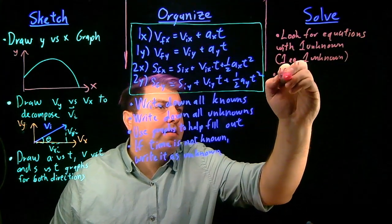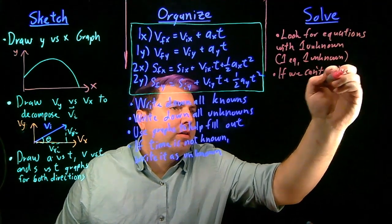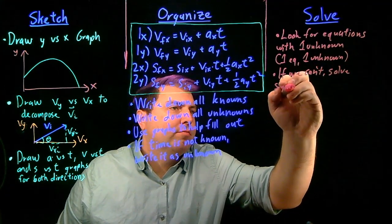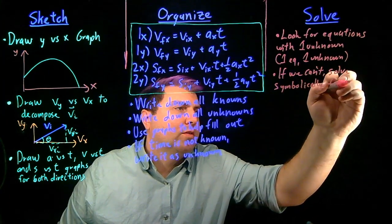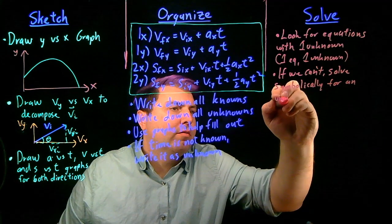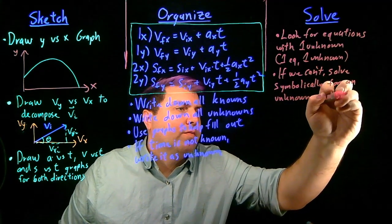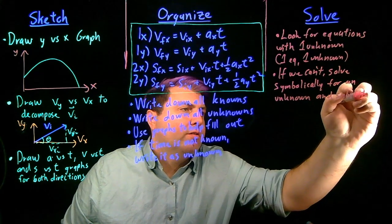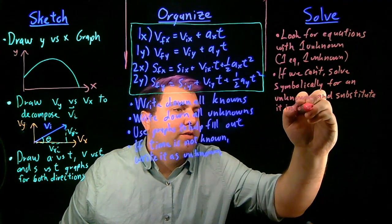But if we can't do this, we want to solve symbolically for an unknown and substitute it into another equation.